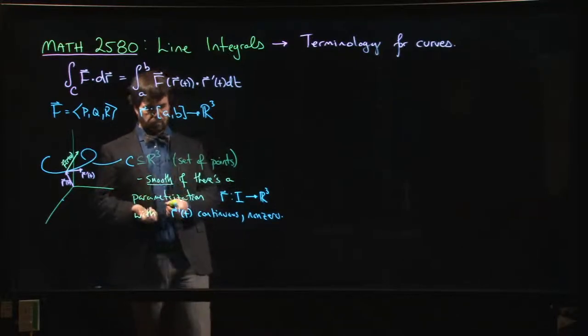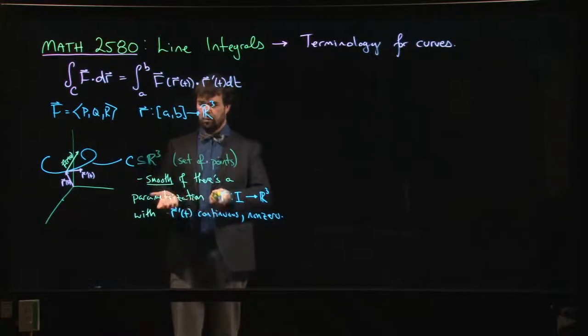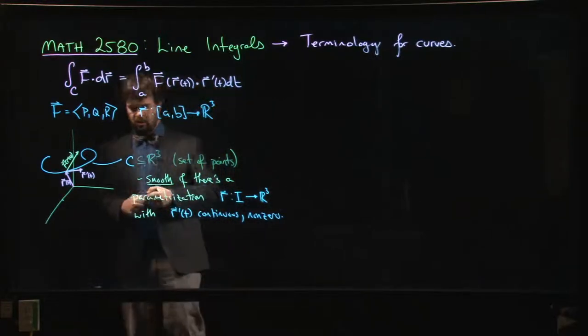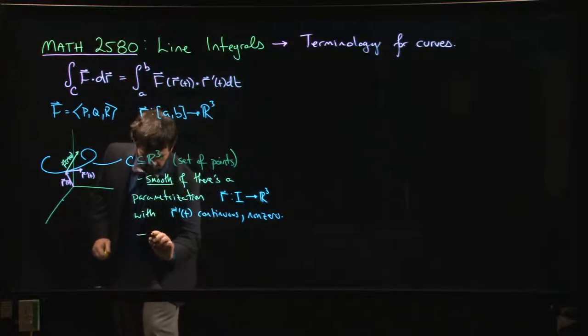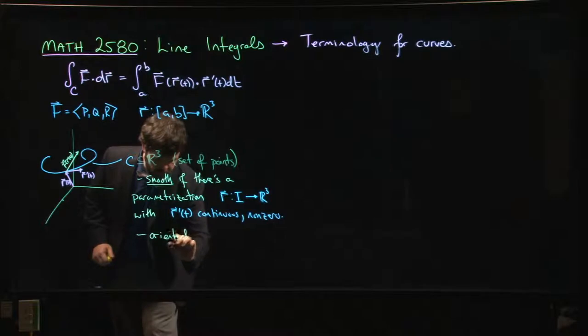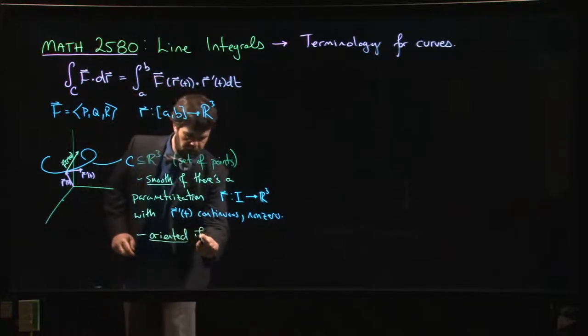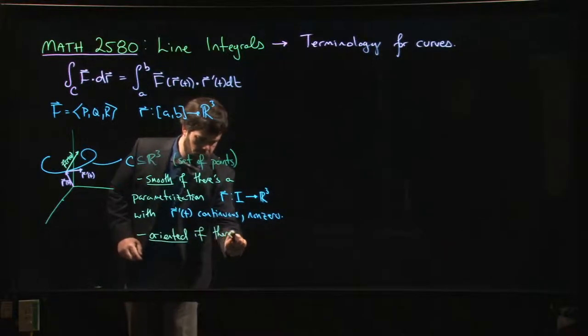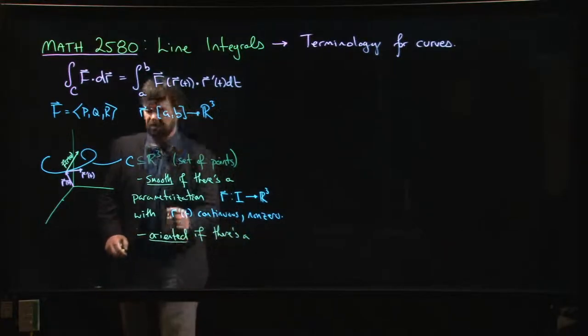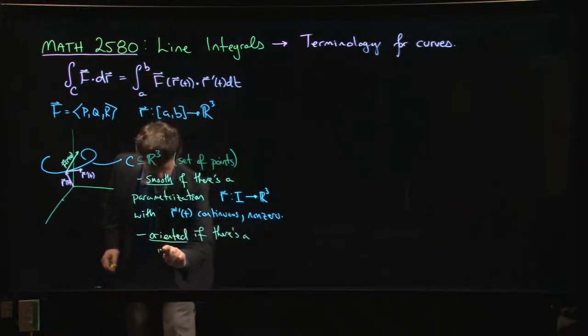Okay, so it's smooth if you can find this parametrization. The next term we might bring in is: it's oriented. So oriented if there's—well, I'll be sort of informal about this—if there's, you know, let's call this a direction of travel.